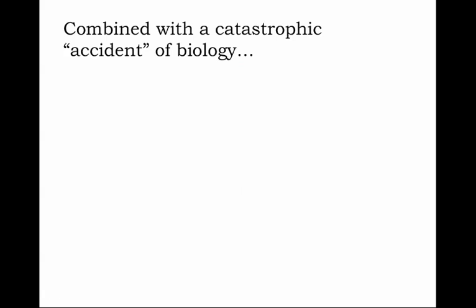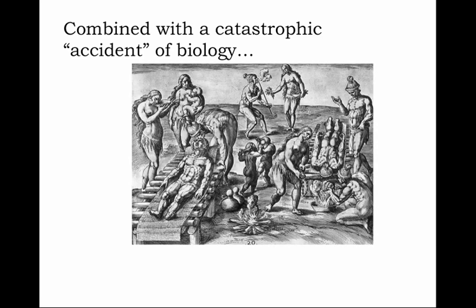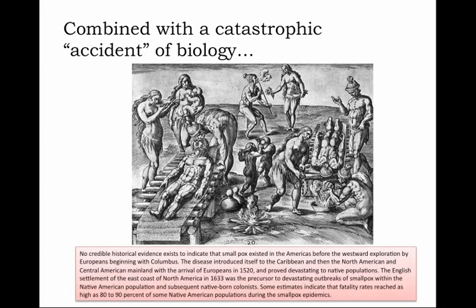All of this combined with the catastrophic accident of biology. More than Spanish horses, more than Spanish swords, it was European disease — particularly smallpox — that proved most devastating. No credible historical evidence exists to indicate that smallpox existed in the Americas before Western exploration by Europeans beginning with Columbus. The disease introduced itself to the Caribbean and then to the North and Central American mainland with the arrival of Europeans in 1520. The English settlement of the east coast in 1633 was the precursor to devastating outbreaks of smallpox within the native American population along the Atlantic seaboard. Some estimates indicate fatality rates reached as high as 80–90% of some native American populations during the smallpox epidemic.